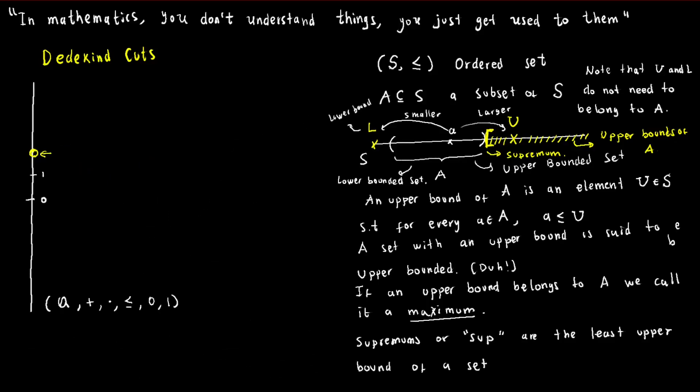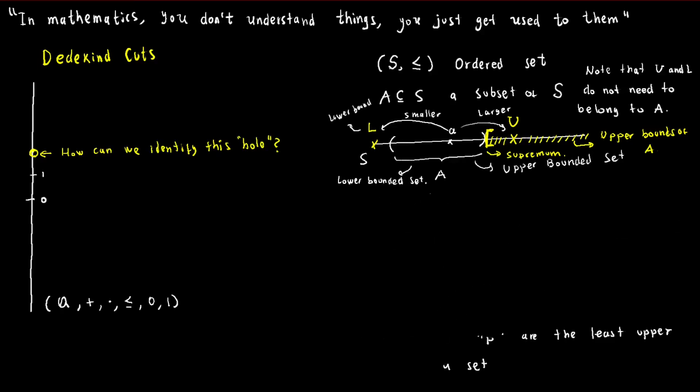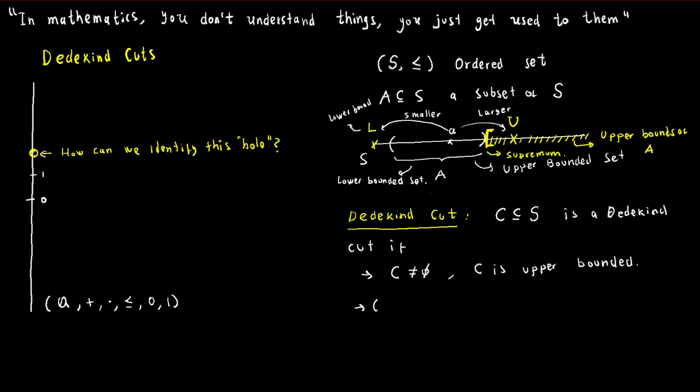So how can we use these definitions to identify the holes in an ordered set? Well, let's take a look. A non-empty and upper bounded set C is called a Dedekind cut if it satisfies two conditions. Firstly, it's closed downwards, which means that if C prime is smaller than C and C is in capital C, then C prime is also in capital C. And secondly, capital C doesn't have a maximum.